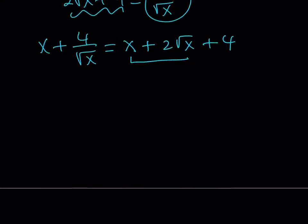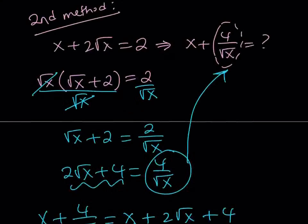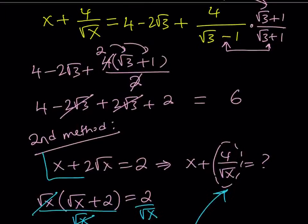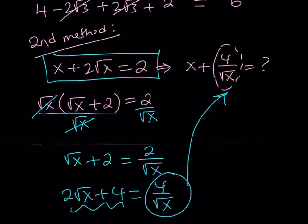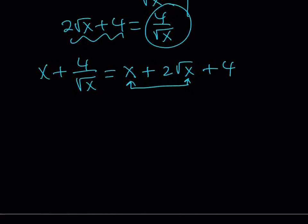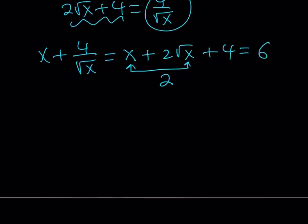Remember, we were given that x plus 2 root x is equal to 2 from here. Remember that? That was given. So now I got that, which means I can replace x plus 2 root x with 2. And our expression is going to equal 6. And that is going to be the same answer that we got in the first method.